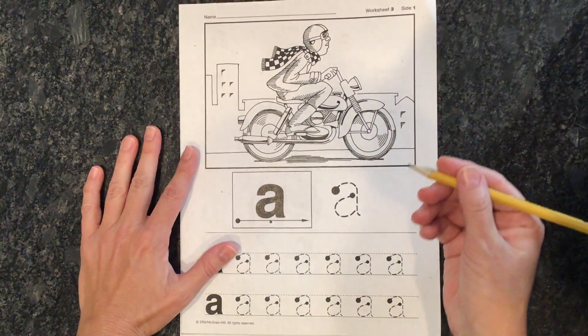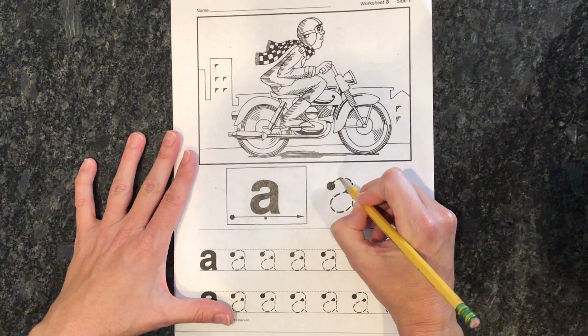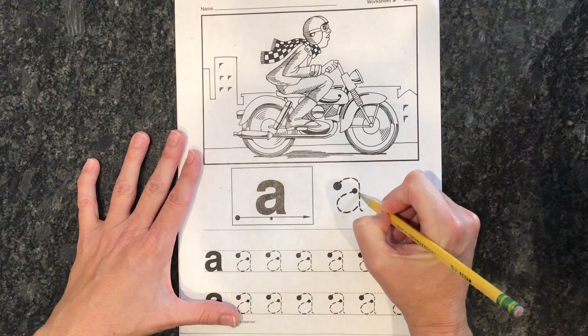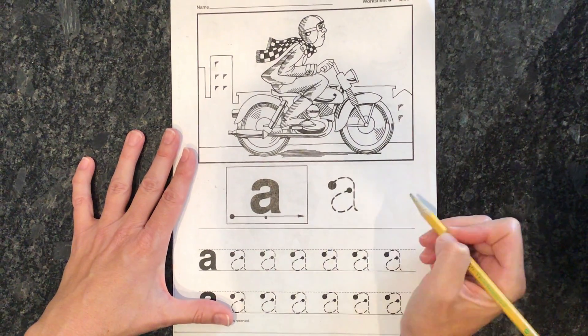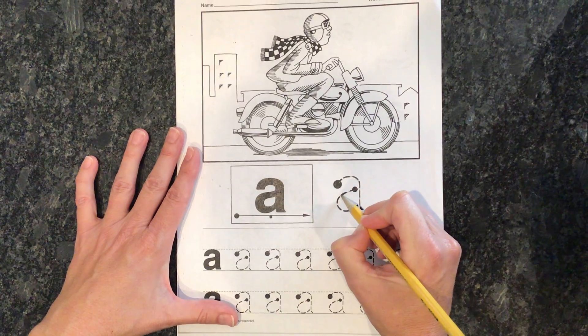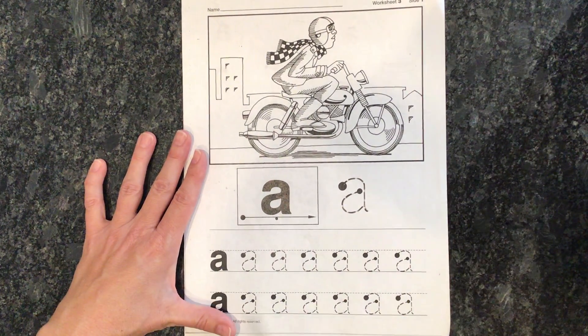All right, keep practicing that as much as you need. Back to this again. We're going to go to the big ball. I'm going to circle around and come down. Do you see it's all on the track? Then I pick up my pencil. I go to the little ball and I circle around here. You're going to do that with all of these.